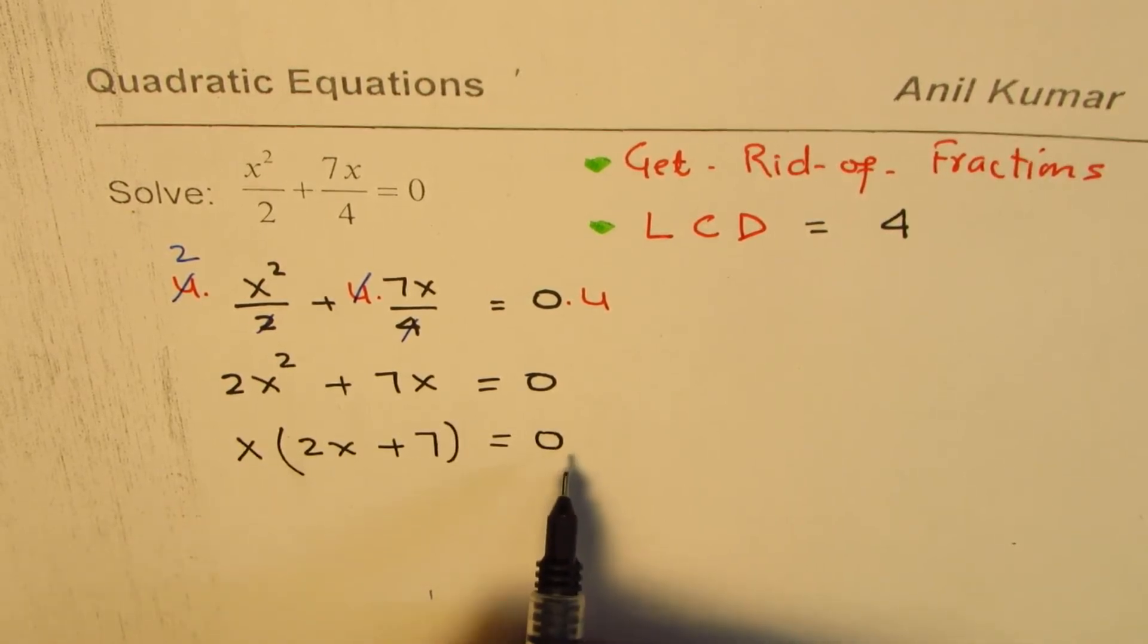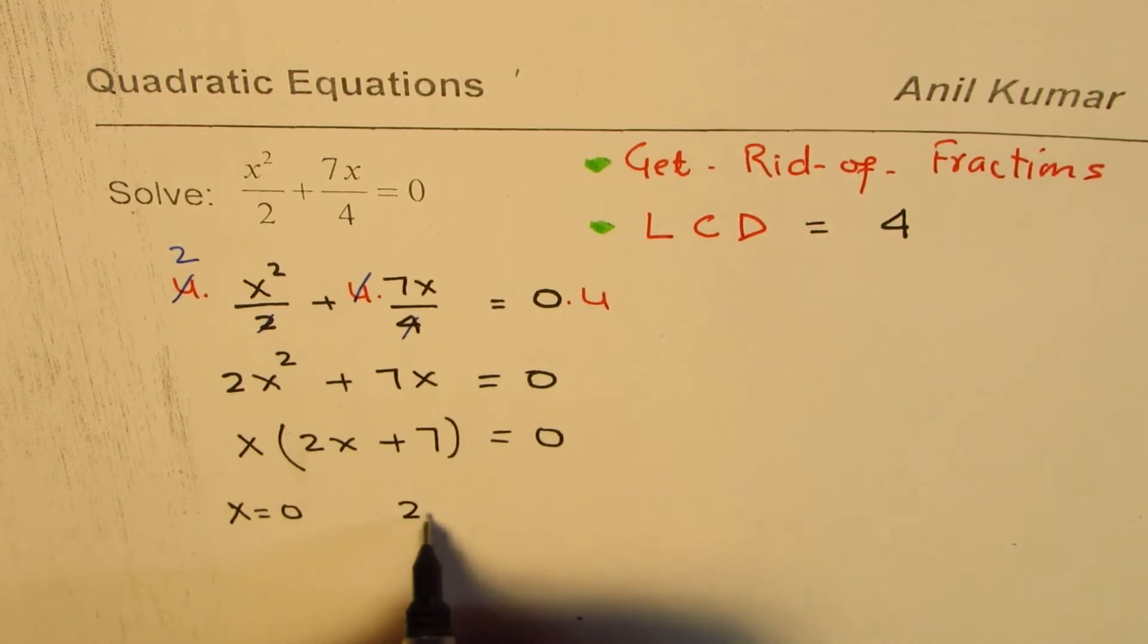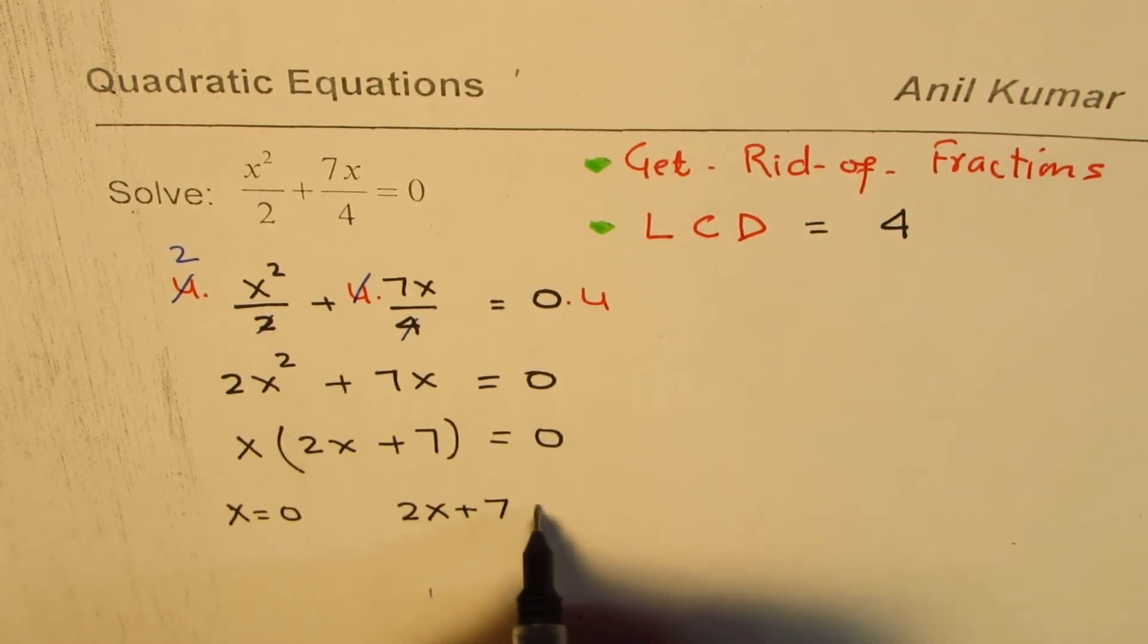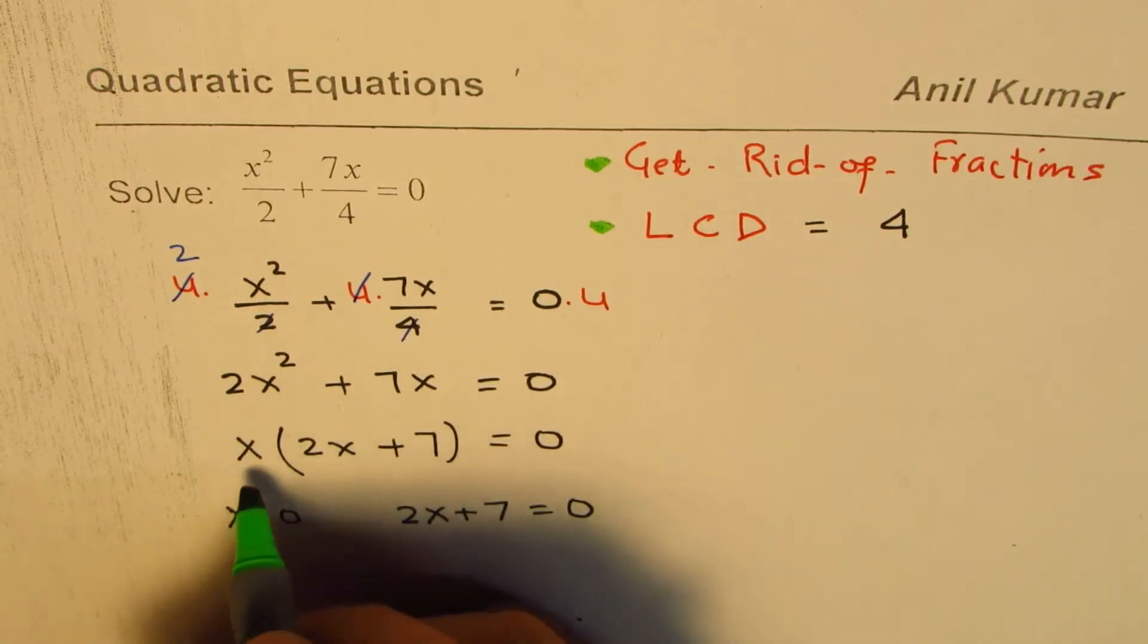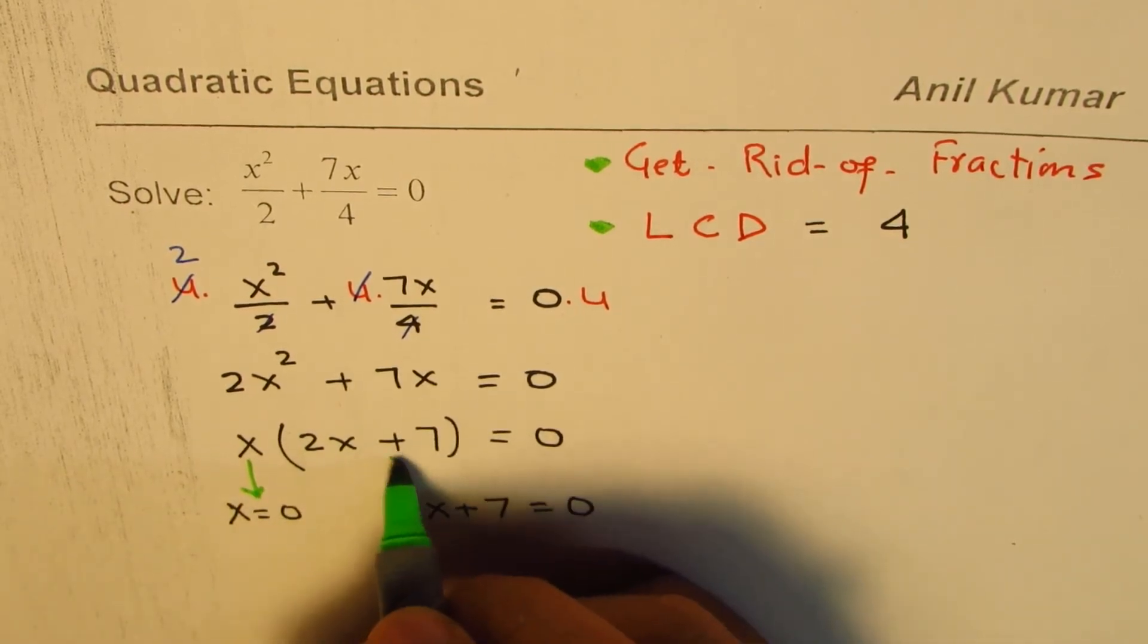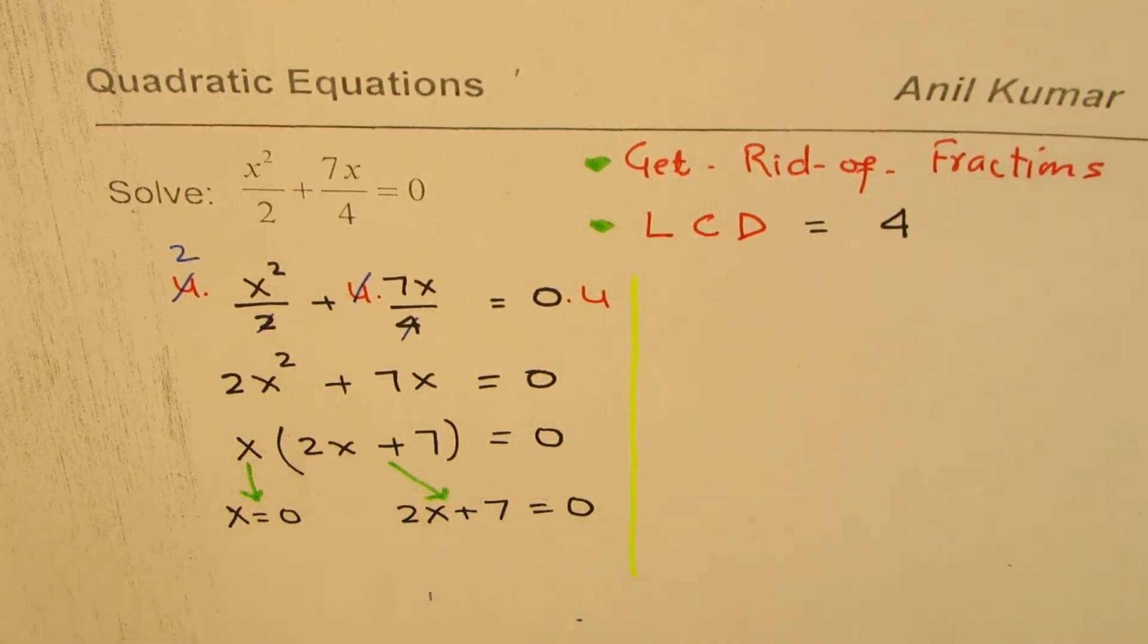Now, that gives us two possible solutions. One is when x equals 0. The other one is when 2x plus 7 equal to 0. So these are the two possible solutions. This is from x, and this is from the other factor. Let us solve and get the solution.